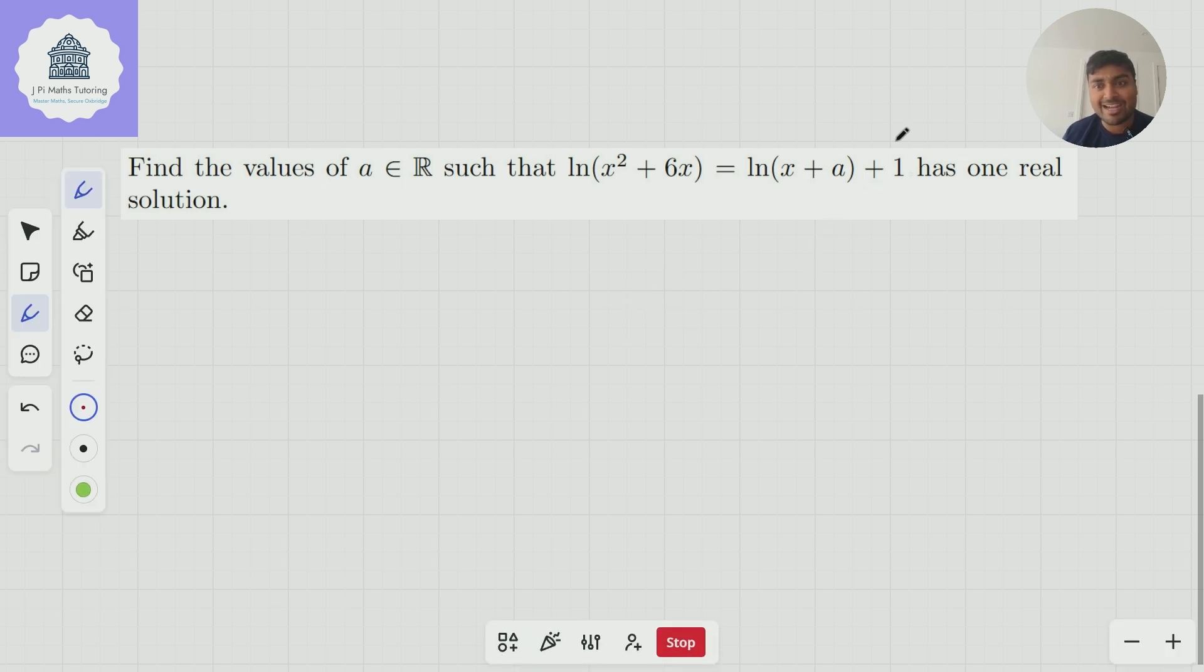Let's have a look at this problem. We want to find all values of a in the reals such that ln(x² + 6x) = ln(x + a) + 1 has one real solution. So this is an equation in x and depending on a this will have some number of real solutions. We want to know the values of a that mean this equation has exactly one real solution.